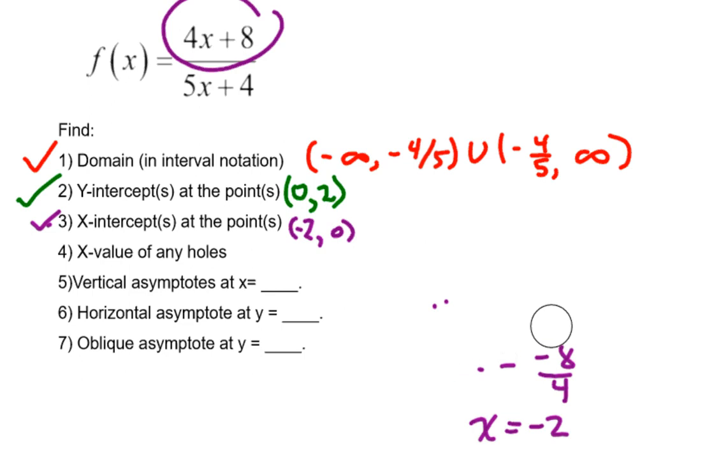Now number 4 says x values where there are any holes in the graph of the function. Well, the only place we're going to have holes is if we factor the top and the bottom of our function and we have factors that cancel out, factors with x in them.